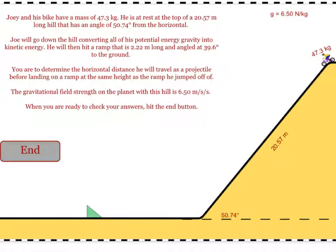So the way you're going to do this is a two-part problem. In part one, you need to find his velocity at the top of the ramp. So he's going to start with potential energy gravity. He's going to change that into kinetic energy, and then as he hits the ramp, some of that kinetic energy will turn back into potential energy gravity.